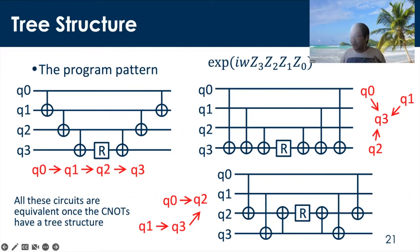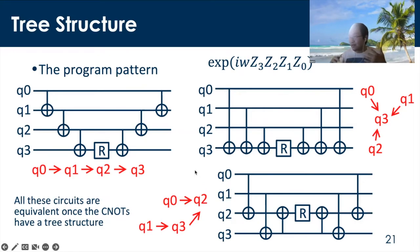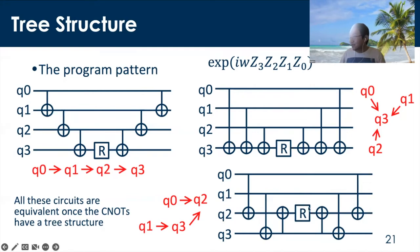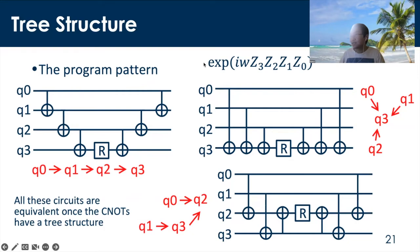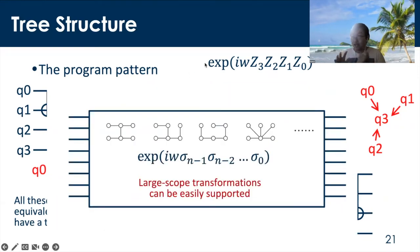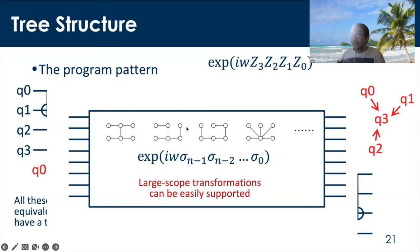For example, in the first circuit the CNOT gates connect Q0 to Q1, Q1 to Q2, Q2 to Q3 — a chain structure, which is a tree. In the second, Q0 connects to Q3, Q1 to Q2, Q2 to Q3 — a star structure, also a tree. The last one is more complex but again forms a tree. From the properties of Pauli string simulations, we know that once the CNOT gates are connecting a tree and the rotation gate is placed at the root of that tree, the circuit implements the Pauli string simulation operator correctly. This gives us a chance to do very large-scope transformations, because all these tree implementations look very different but are equivalent.